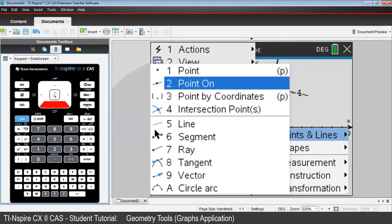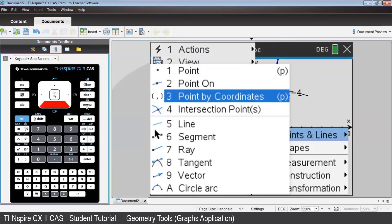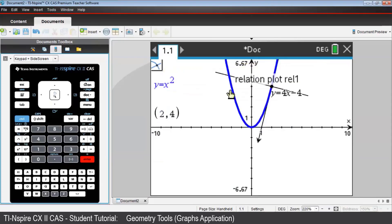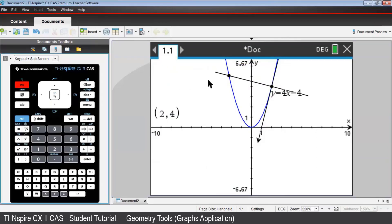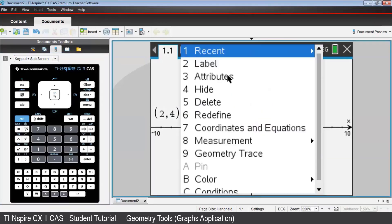Following the icon's instructions, select by clicking the parabola and the perpendicular, in any order. Press Escape to get out of the intersection sub-menu. Using techniques shown before to find the coordinates of this new point, guide the cursor to the point, press Control, then Menu, and select Coordinates and Equations.